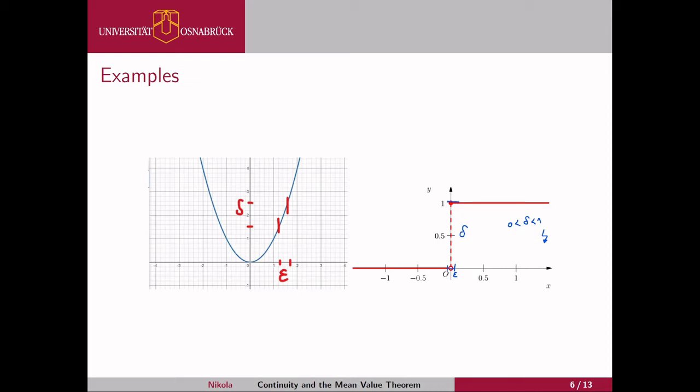On the right-hand side we see a non-continuous function. No matter how small we make epsilon, delta between zero and one will always stay one. If you want a smaller delta than that, it just doesn't work — it collides.